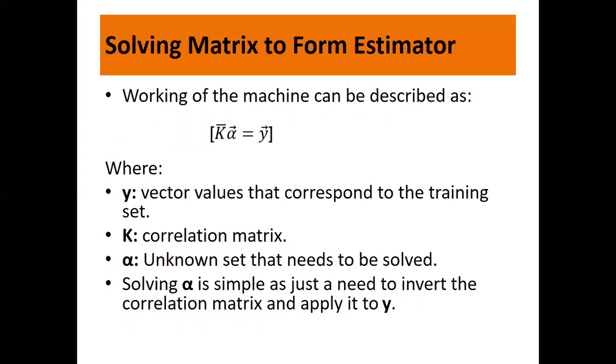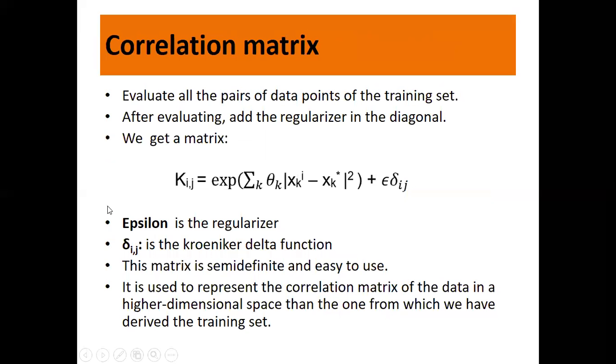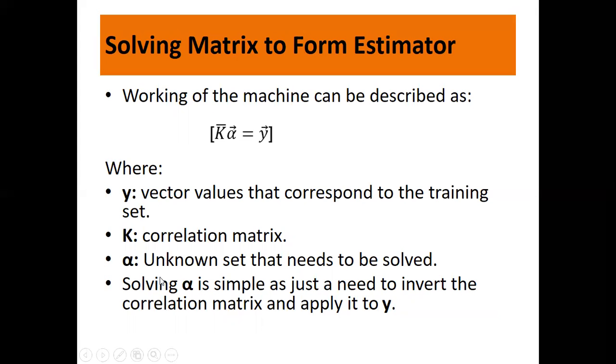Solving the matrix to form estimator—this is the main part while creating the SVR machine. It is plane linear algebra. Working of the machine can be described as K times alpha equals y, where y is vector values corresponding to the training set, K is the correlation matrix, and alpha is the unknown set that needs to be solved. Solving alpha is simple: just invert the correlation matrix and apply it to y.